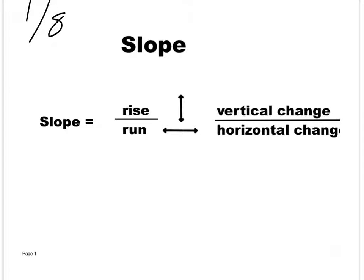We're going to talk about finding the slope of a line. You're going to use this formula: it's rise over run. Rise is the vertical change, run is the horizontal change. The easiest thing to remember is you should always go to the right when you're talking about run. If you go to the left, you have to change the sign of your rise, which messes people up. So it's easier to go to the right — sometimes you won't be able to, but if possible, go right.